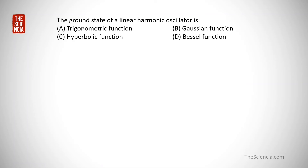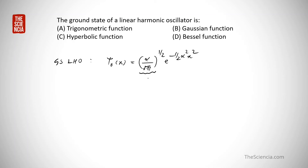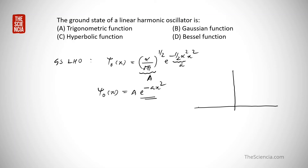The ground state of the linear harmonic oscillator has wave function psi-zero of x equal to (alpha divided by root pi) raised to the power one-half, times e raised to minus one-half alpha squared x squared. This can be written as a constant times e raised to minus a times x squared. Plotting this gives a Gaussian profile. The answer is option B.